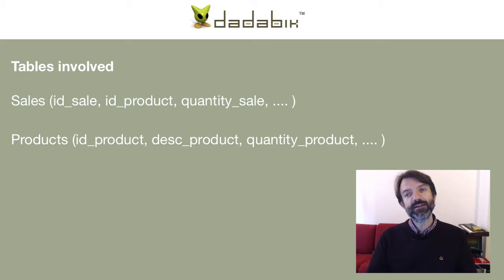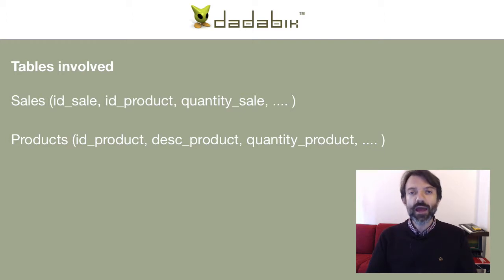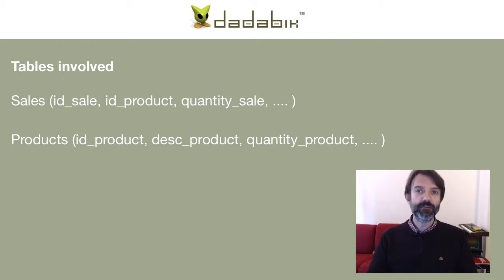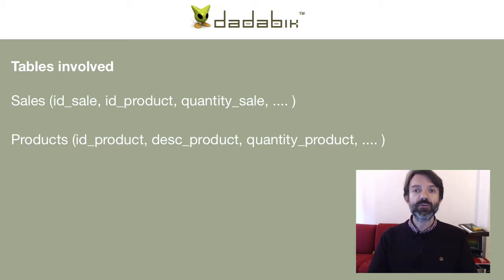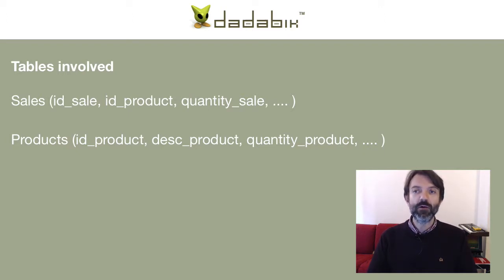We also have a products table containing the warehouse quantity for each product. We'll assume we have enough product to satisfy the order. We can add a custom validation function to check if the quantity is sufficient before the sale is registered — we studied custom validation functions in part three of this tutorial. So we can safely assume that if an order is registered, we have the needed product in our warehouse.